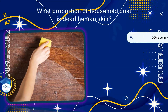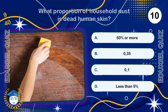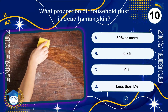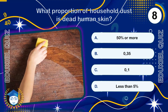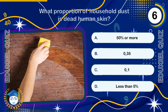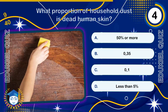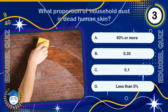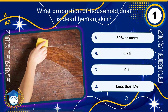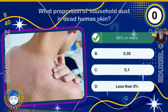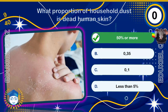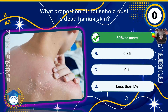What proportion of household dust is dead human skin? 50% or more. Skin cells constantly flake off and become a major component of household dust, entirely replacing the entire outer layer of skin, the epidermis, every 28 days.